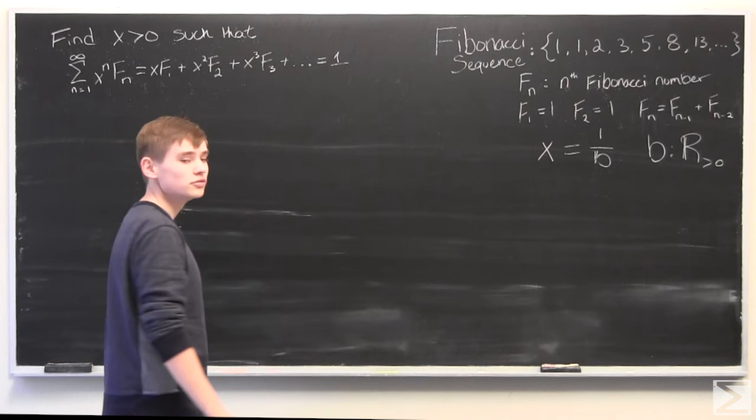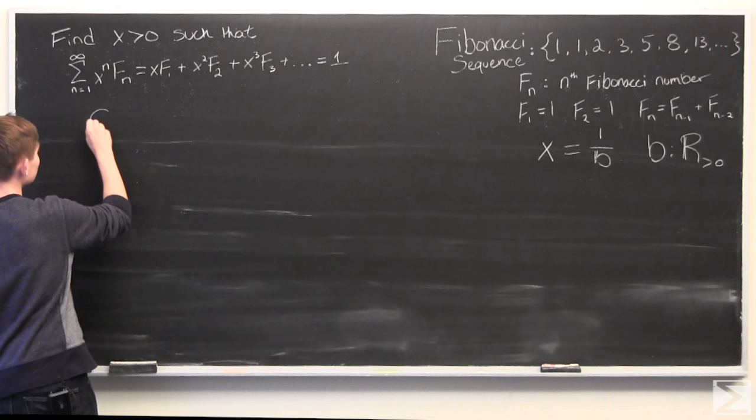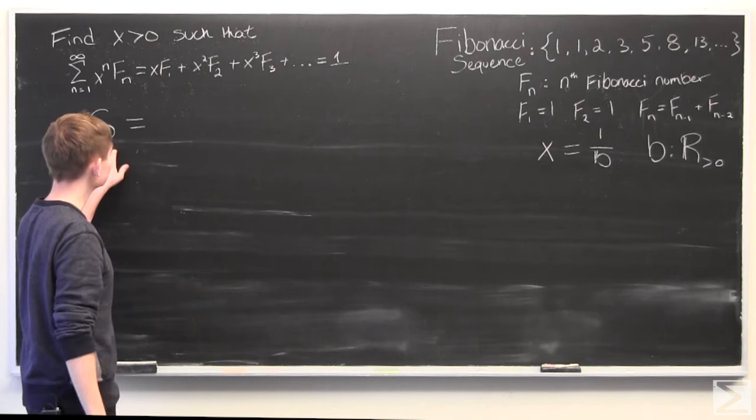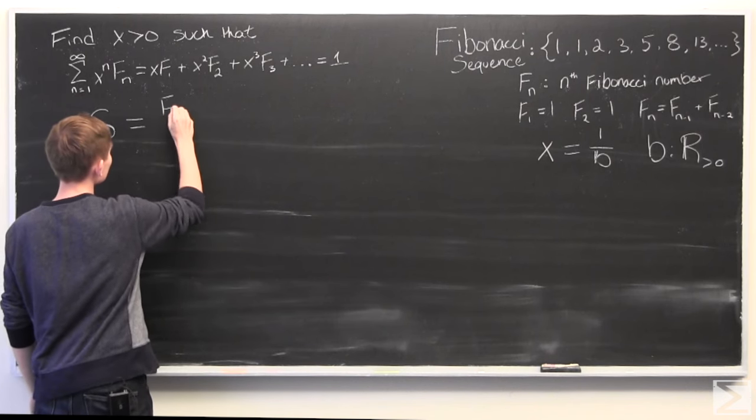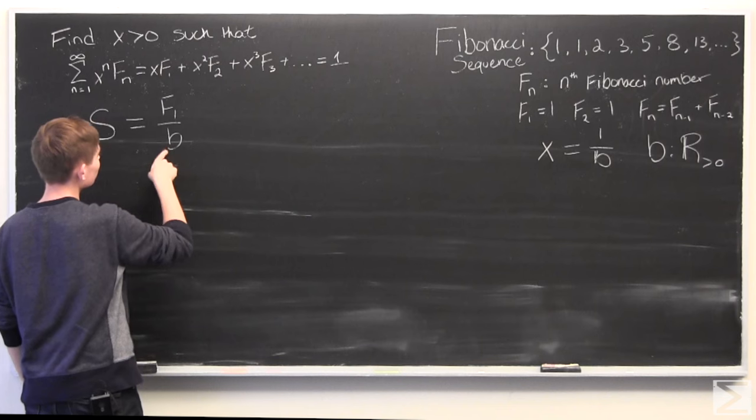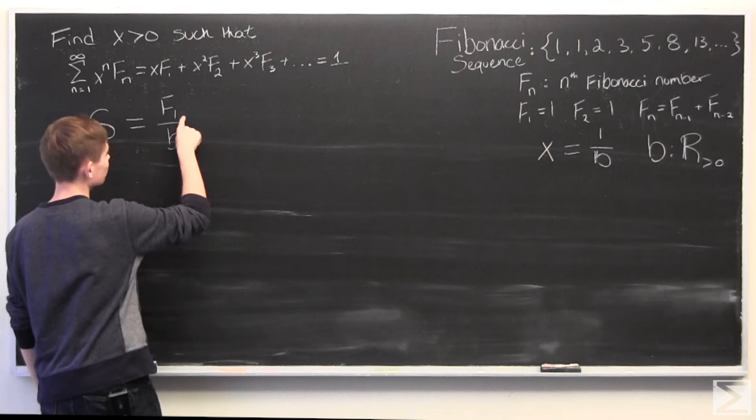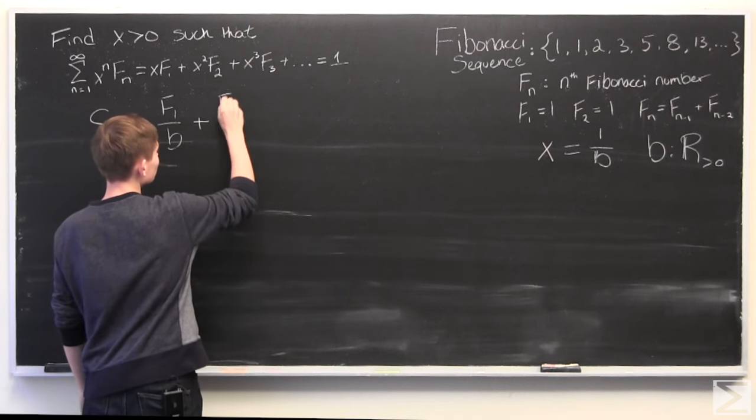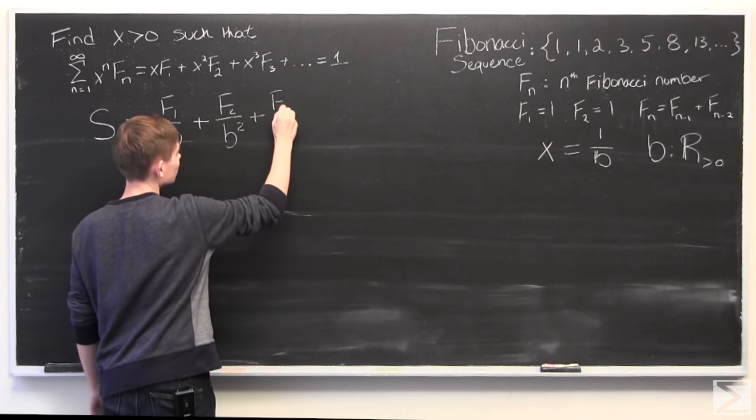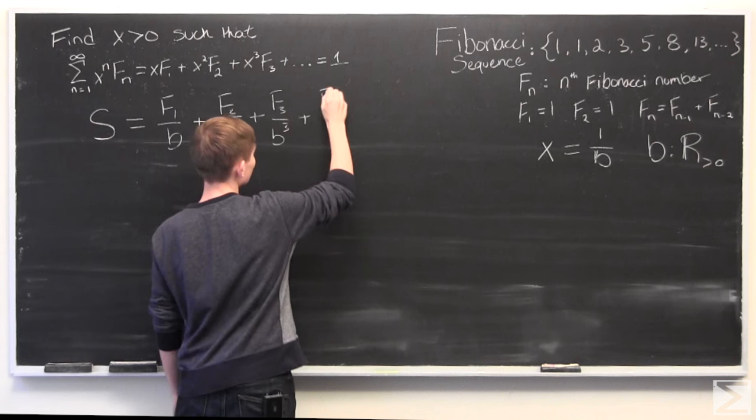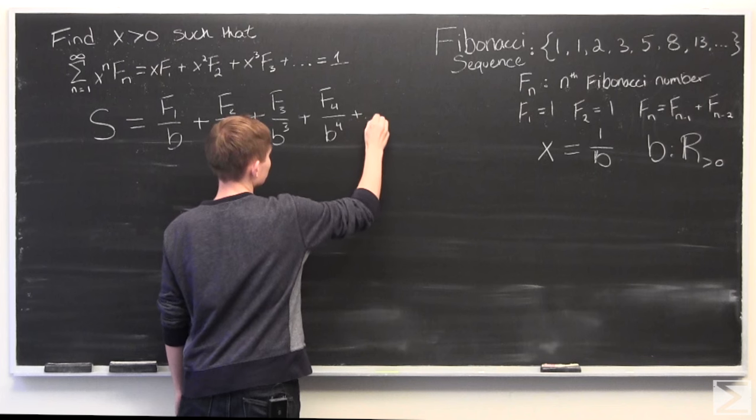And the next thing we're going to do is to set this equal to s, where s is f1 over b, where we're substituting in 1 over b for x. So, f1 over b plus f2 over b squared, f3 over b cubed, and so on.